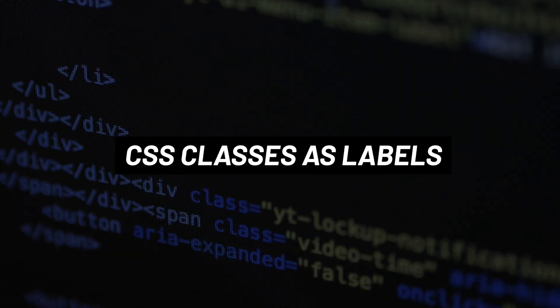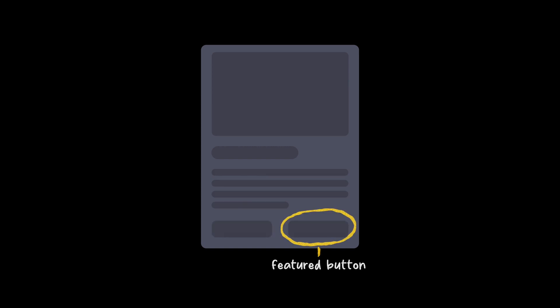Let's explain BEM using a card design. This card has the main card itself, a featured image at the top, a title, an excerpt or short piece of text, and there are two buttons. One styled differently is a featured button.